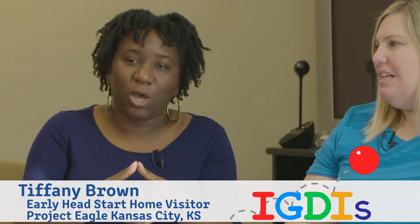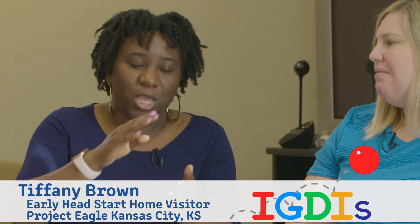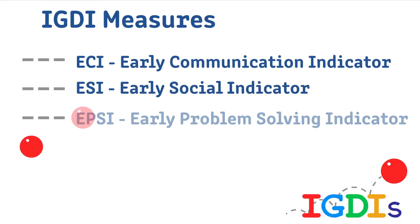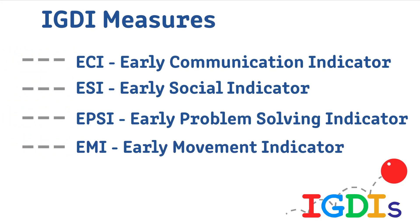We use IGDIs to show parents that they are great parents, that they are doing things in the home to help their child in the four components. In ECI — that's Early Communication Indicators — their child is talking, their child is moving. It's all because of the great work that the parents are doing with their child.